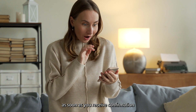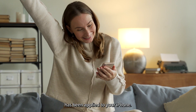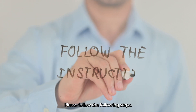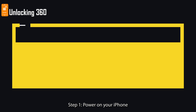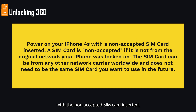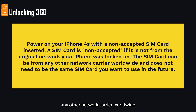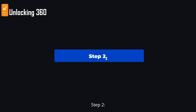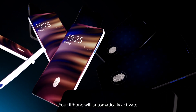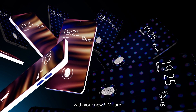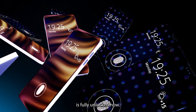As soon as you receive confirmation that the unlock has been applied to your iPhone, please follow these steps. Step 1: Power on your iPhone with a non-accepted SIM card inserted. A SIM card is non-accepted if it is not from the original network your iPhone was locked to. The SIM card can be from any other network carrier worldwide and does not need to be the same SIM card you want to use in the future. Step 2: Your iPhone will automatically activate with your new SIM card, meaning your iPhone is fully unlocked.